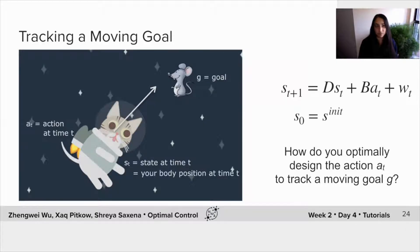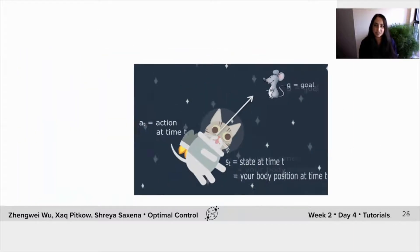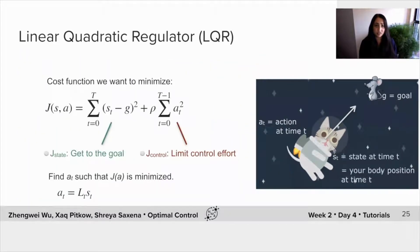Now, G basically becomes a function of T. In fact, the setup stays very similar. So here, remember, this was our LQR problem, and this was the cost function that we wanted to minimize.